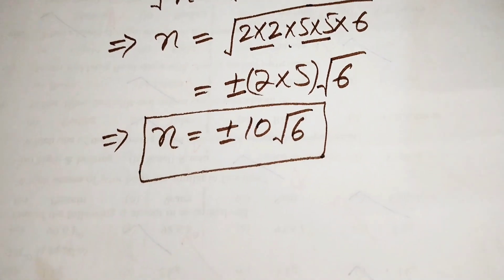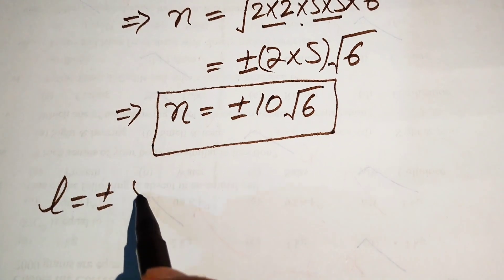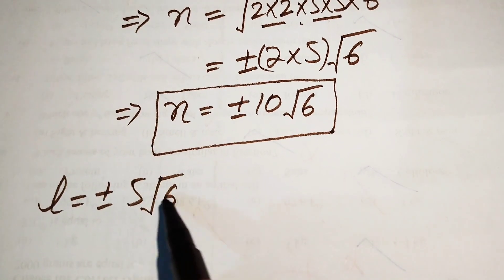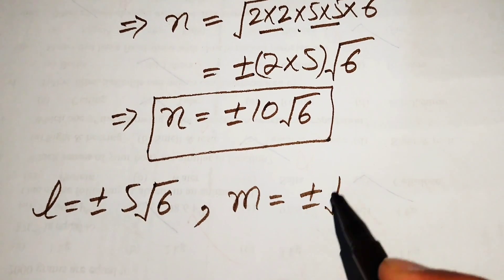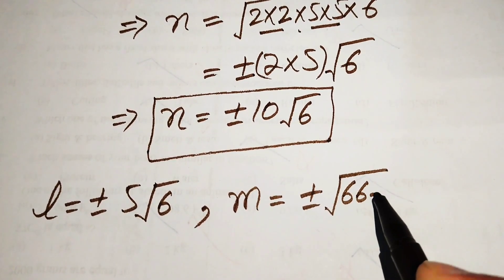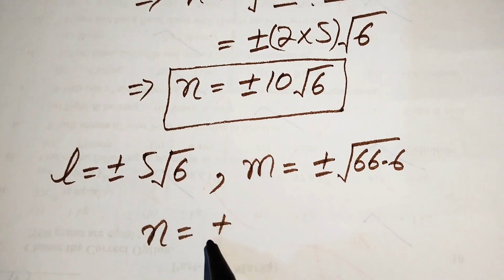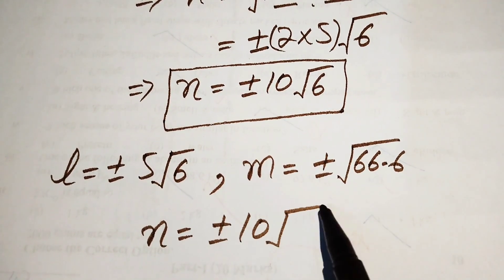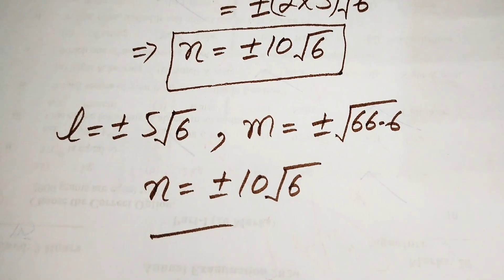Finally, we have L equals plus or minus 5 root 6, M equals plus or minus square root of 66.6, and N equals plus or minus 10 times square root of 6. These are the values of L, M and N and this is the final answer. Thank you so much for watching this video. Please subscribe to my channel for more exciting videos.